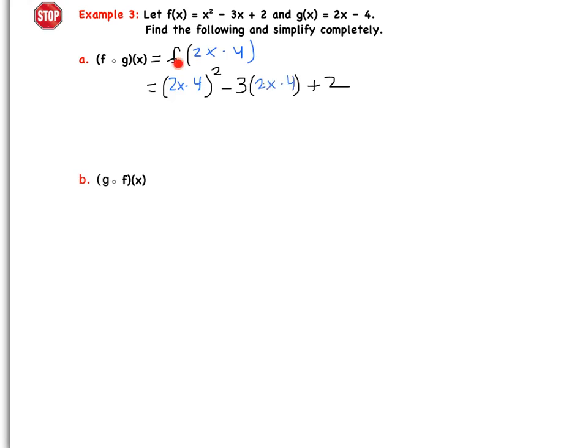Now here's where we tend to make mistakes is at this area right here. We cannot distribute that power inside. This is a binomial. We're squaring it. So it's like saying (2x - 4) times (2x - 4). If you did this correctly, you are going to get three terms: 4x² - 16x plus 16. And then we go ahead and we distribute that -3 and continue cleaning everything up. So that's going to be -6x + 12 and don't forget about that +2 in the end.